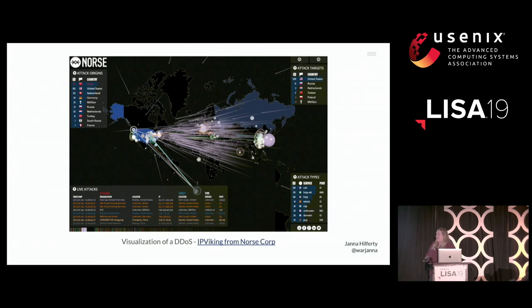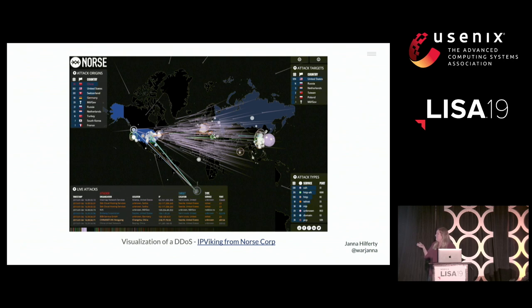A DDoS attack can look something like this — it's not just a single point of origin coming to attack your website. It can be distributed from all over the world. This is a tool called IP Viking from Norse Corp, and you can watch this real-time traffic around the world at any point if you use this tool. But it can be really intimidating to look at something like that coming to a single target server.